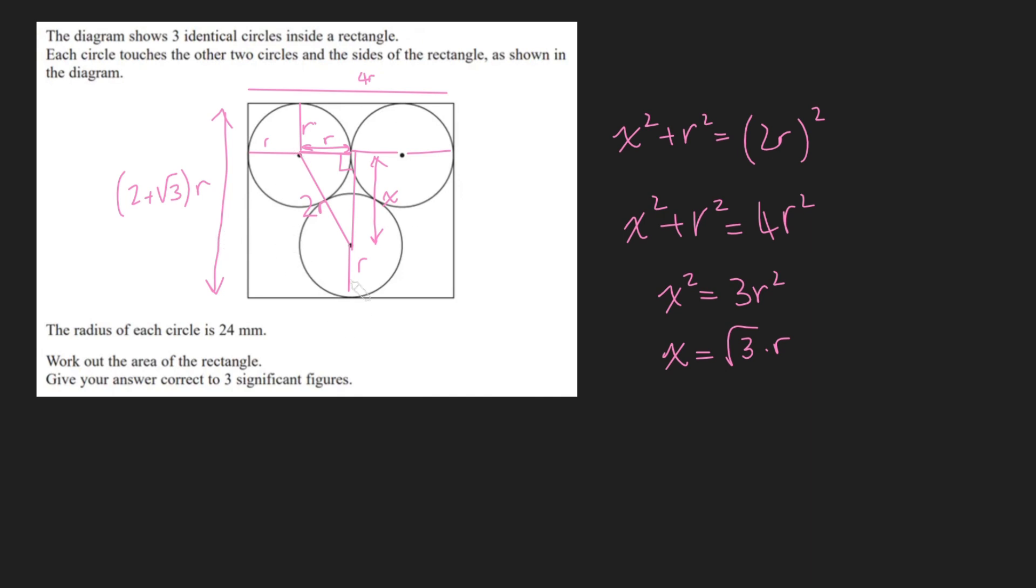Perfect. So what's the area of this rectangle? Well, it's just 2 plus root 3 times R times 4R, which is just 8 plus 4 root 3 all times R squared. And if you're doing this question in the exam, here's where you would sub in R is 24, and put this into your calculator and give it to three significant figures. But of course, I'm not going to do that because I don't own a calculator.